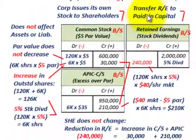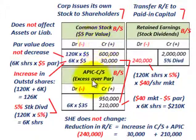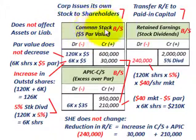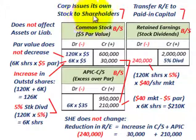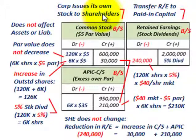Looking at our accounts — common stock, additional paid-in capital, and retained earnings — notice there is no asset involved. This does not affect any assets or liabilities. All it affects is shareholders' equity between these three accounts. We're going to transfer retained earnings to paid-in capital. The corporation issues its own stock to its shareholders with no assets exchanged and no exchange of money — shareholders don't pay a cent.